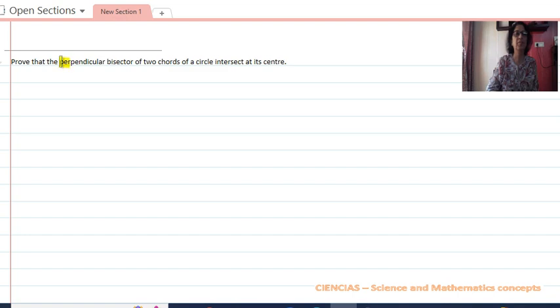The question is: prove that the perpendicular bisector of two chords of a circle intersects at its center.